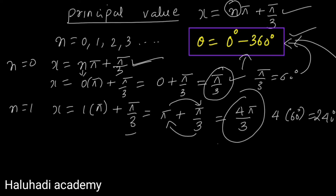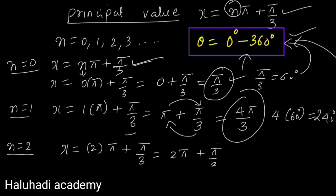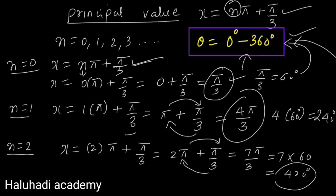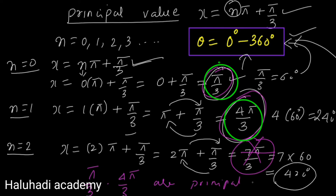For n equals two: x equals 2π plus π/3. LCM gives (6π + π)/3 equals 7π/3, which is 420°. Since 420° is outside the range 0 to 360°, 7π/3 is not a principal value. Therefore the two principal values are π/3 and 4π/3.